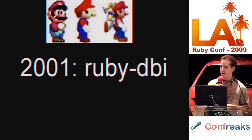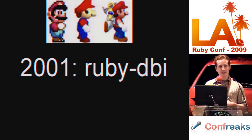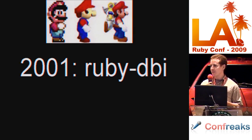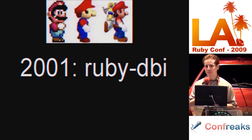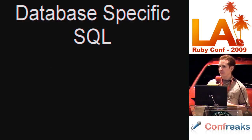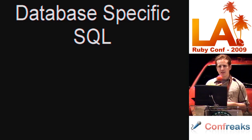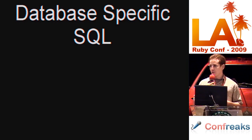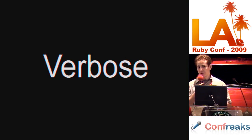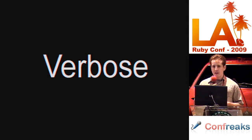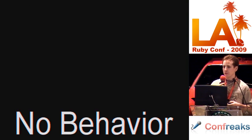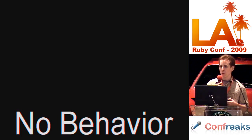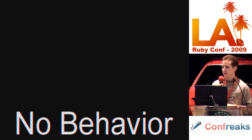In 2001, the Ruby DBI project was started, which gave programmers a standard database access interface. While this allowed for database-independent code, it still had some problems. It only abstracted the APIs, so the programmer was still responsible for database-independent SQL. It still required the programmer to write all the SQL out. And while it was more flexible — users could choose whether they wanted array, hash, or row objects returned — it still didn't offer the ability to easily assign behavior to records.